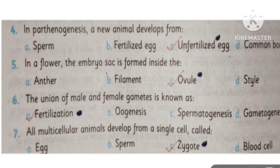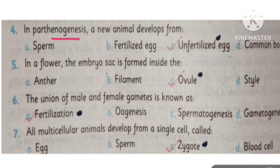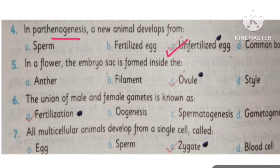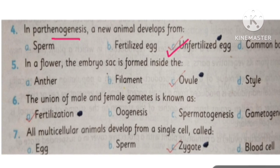MCQ number 4: In parthenogenesis, a new animal develops from an unfertilized egg. MCQ number 5: In a flower, the embryo sac is formed inside the ovule.